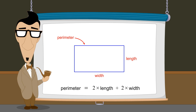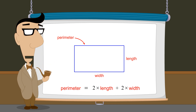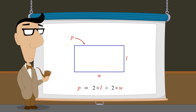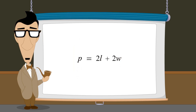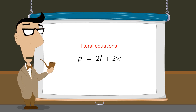This formula relates three quantities: perimeter, length, and width. Instead of using words to represent these quantities, we can write this more compactly using letters like P, L, and W. Formulas for calculating the value of one unknown quantity from one or more other quantities whose values are known are sometimes called literal equations. The word literal refers to the fact that variables in the formula are replaced by the actual or literal values corresponding to a specific case of the relationship.